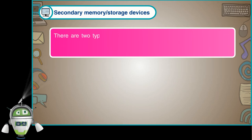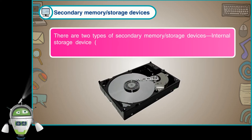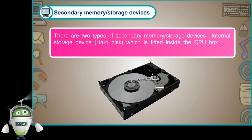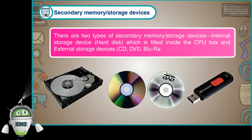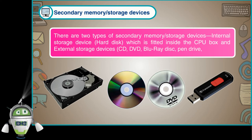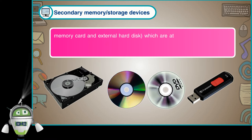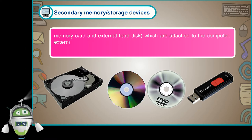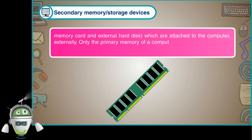There are two types of secondary memory or storage devices: internal storage devices, such as the hard disk which is fitted inside the CPU box, and external storage devices such as CD, DVD, Blu-ray disc, pen drive, memory card, and external hard disk, which are attached to the computer externally. Only the primary memory of a computer can help to access and use the data saved in these devices.